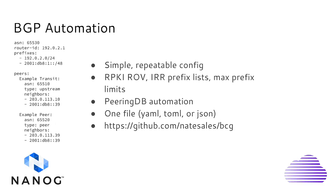BGP automation is one of the things really important in a network. The key is simple, repeatable configs that can be templated easily and deployed consistently. I designed a tool that handles RPKI, IRR prefix lists, and max prefix limits, pulling automatically from PeeringDB. It queries PeeringDB based on the peered ASN and retrieves the AS set, max prefix limits, and peers accordingly. The entire config is built by one file per router — a ~50-line YAML, TOML, or JSON file — handling filtering and session generation automatically. This is called BCG, the BIRD Configuration Generator, and it's open source on GitHub.